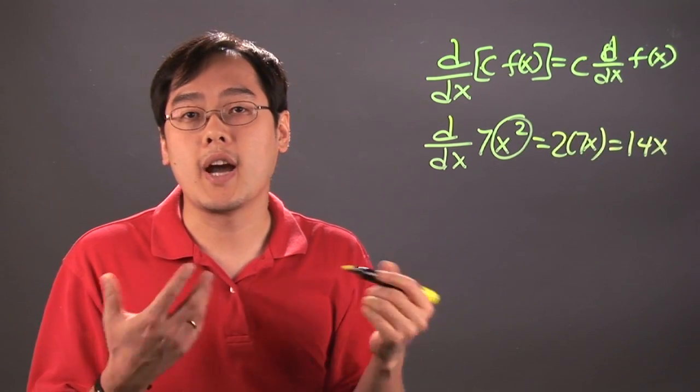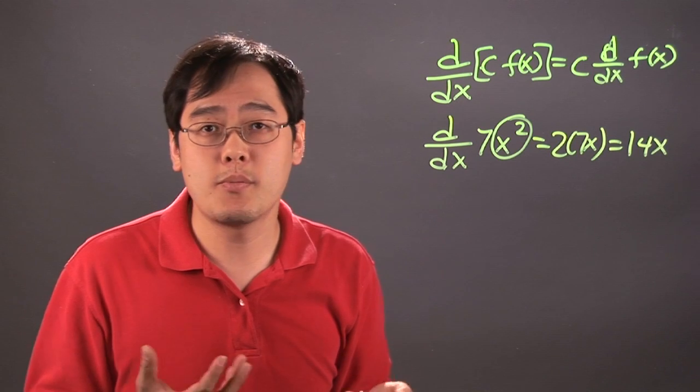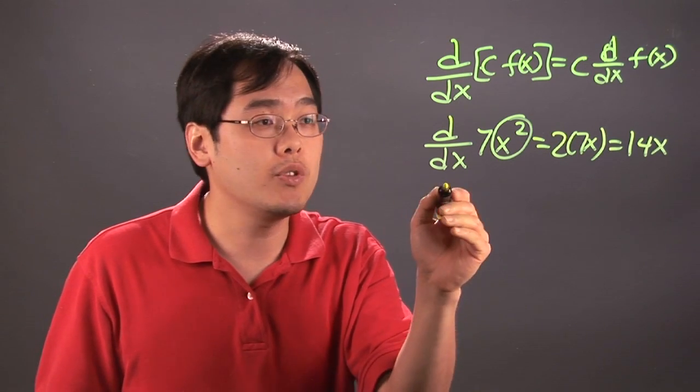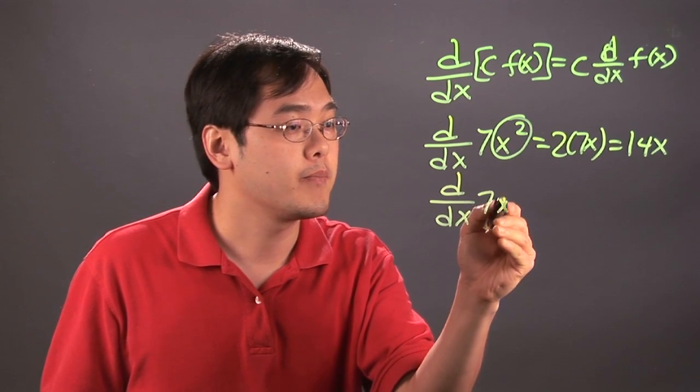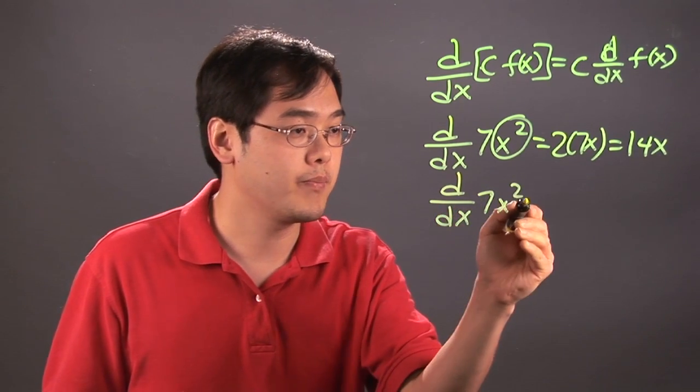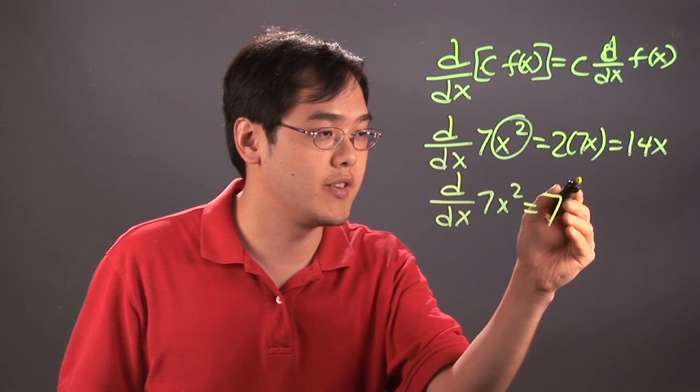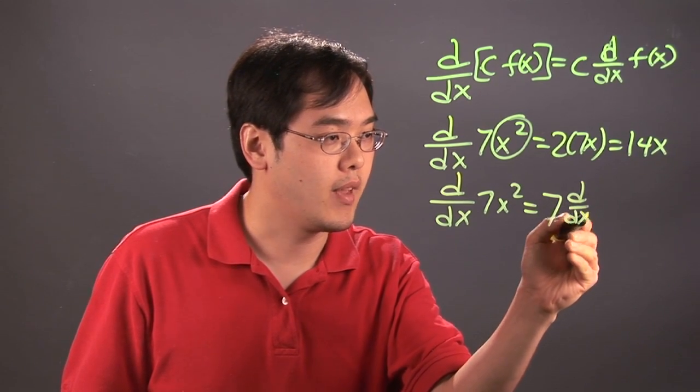Now here's where the constant multiple rule can be used. It's a pretty straightforward rule at the end. What the rule says is if you have the derivative of 7x squared, you can move the 7 on the outside. So this would be 7 times the derivative of x squared.